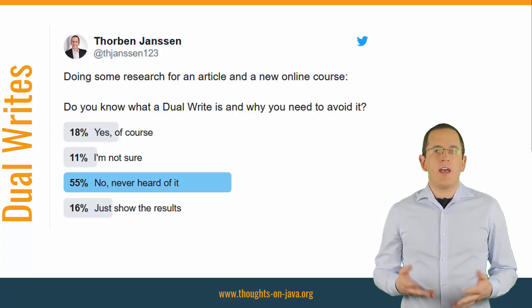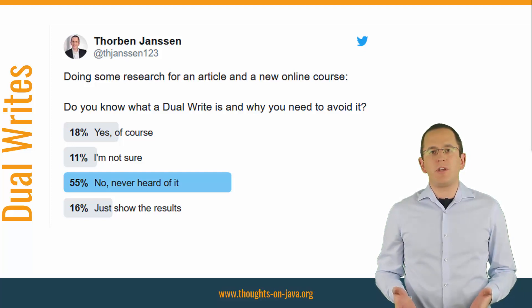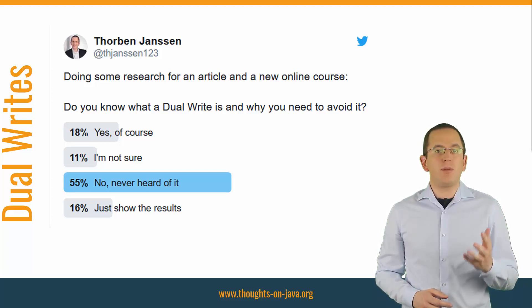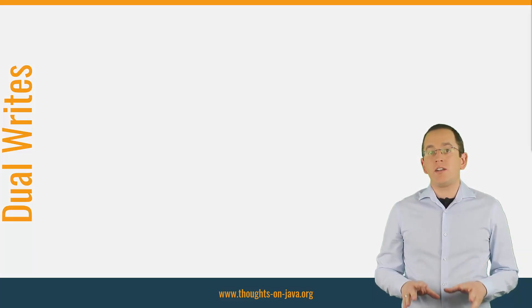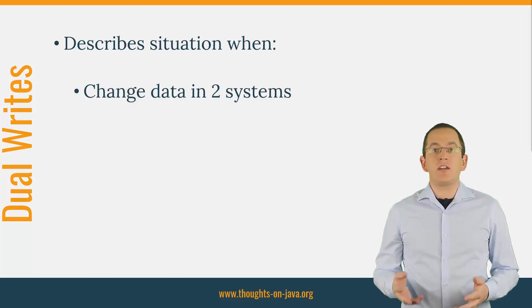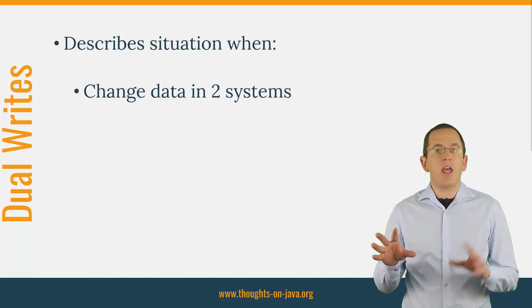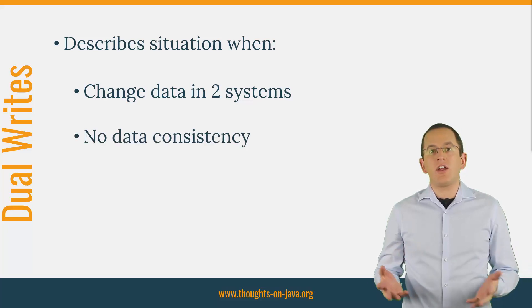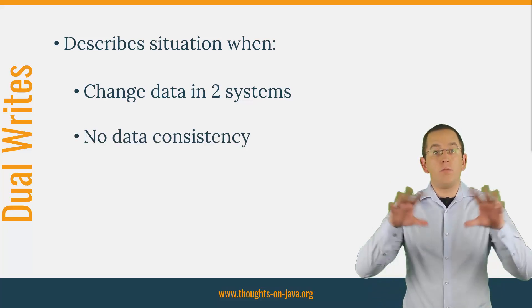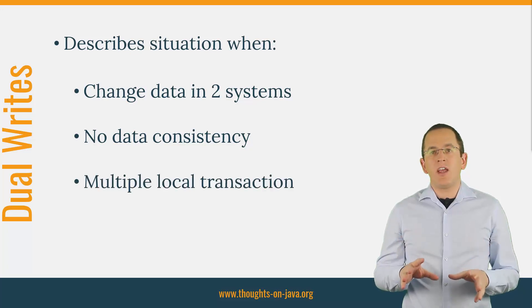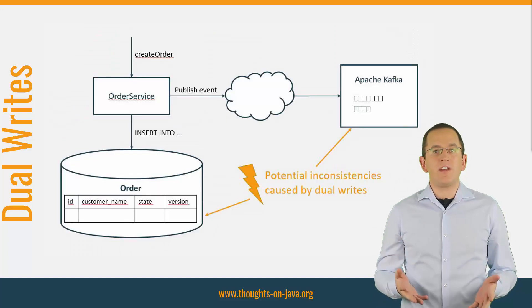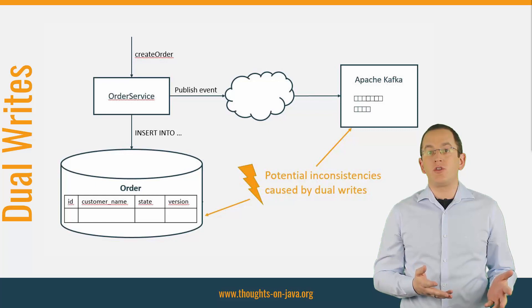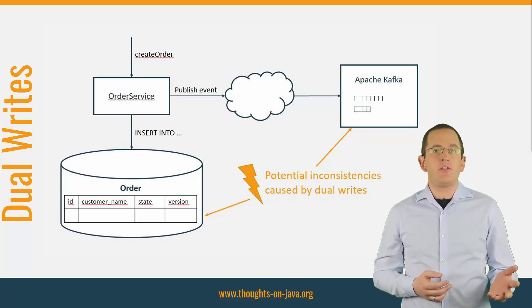Let's talk about dual writes and why they are such a problem in microservice-based applications. A dual write describes the situation when you change data in two systems — for example, a database and Apache Kafka — without an additional layer that ensures data consistency over both services. That's typically the case if you use a local transaction with each of the external systems. Here you can see a diagram of an example in which I want to change data in my database and send an event to Apache Kafka.